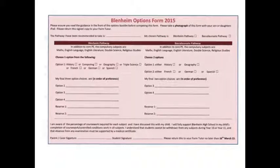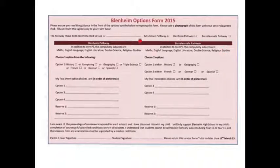Just look at the form. We have the same subjects for both pathways at the top. Every student will undertake English, Maths, Double Science and RS, and they will then have a core PE lesson. This is non-examined — it's just about undertaking physical activity throughout Key Stage 4. Then we're into the options process.